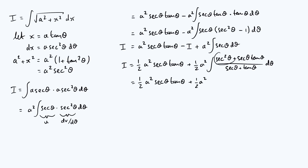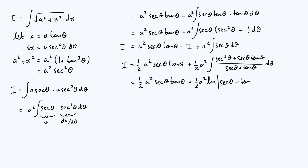The logic of that trick is that sec squared is the derivative of tan, and sec times tan is the derivative of sec, so the numerator is exactly the derivative of the denominator. When you have a derivative over the original function in an integral, you get a natural log. So the integral of sec θ is the natural log of |sec θ plus tan θ| plus a constant of integration.